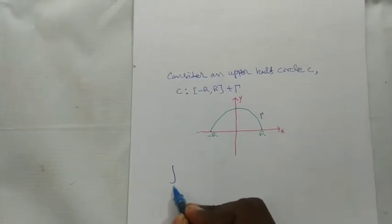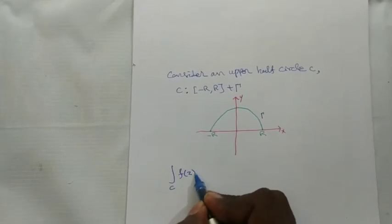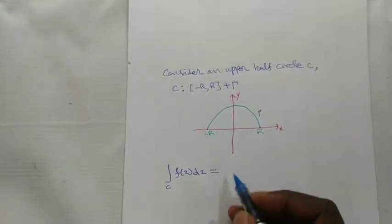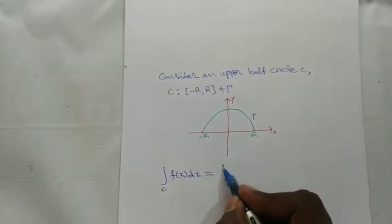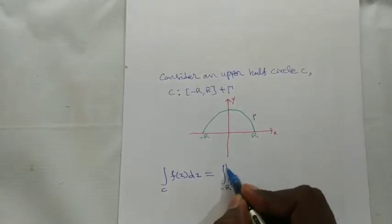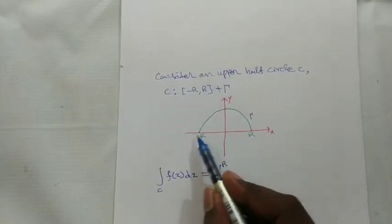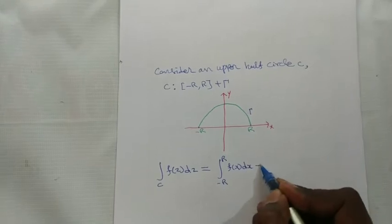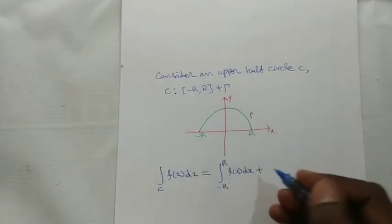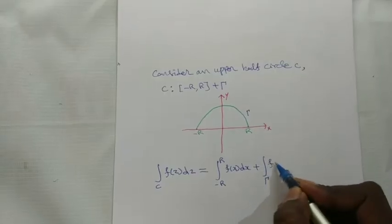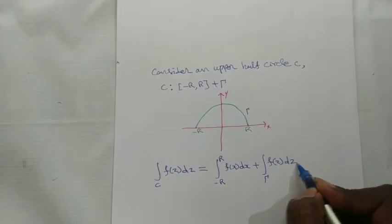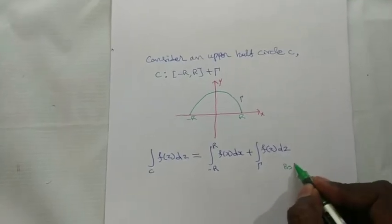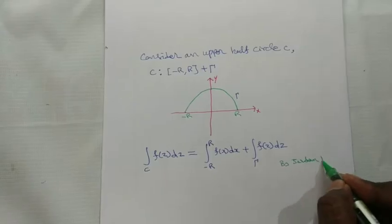From the diagram, the integral over C of f(z) dz represents the entire half circle. The path from minus R to plus R lies only on the x-axis, so we write the integral as the integral of f(x) dx plus the integral over gamma of f(z) dz.